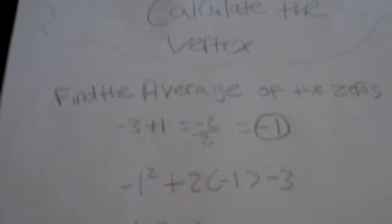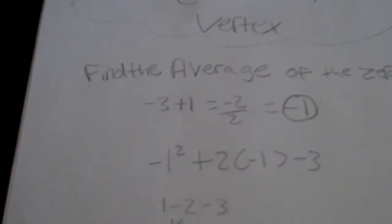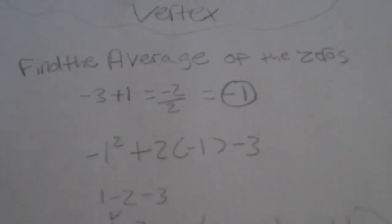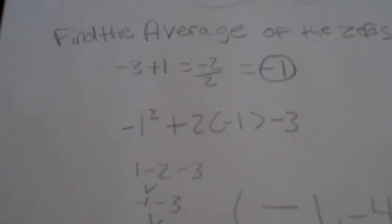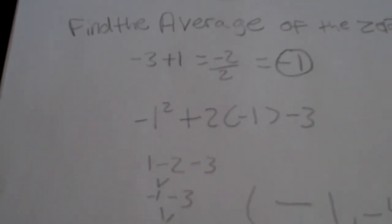The next thing you want to do to solve this function is calculate the vertex. The first step in calculating the vertex is to find the average of the zeros. You add the zeros together, negative 3 and 1, which equals negative 2.